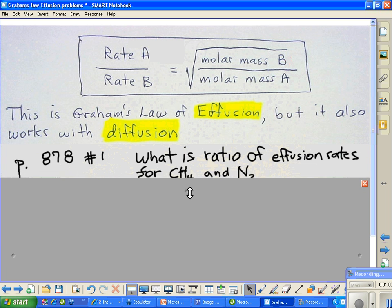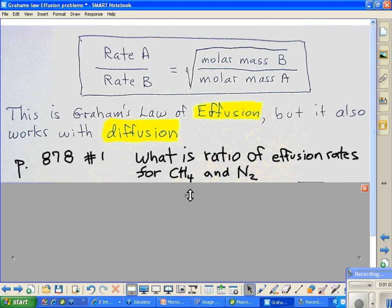First thing we want to do is look at what they're actually asking us to do. We're on page 878, and that's Appendix A at the back of the book, and number 1 in Chapter 13. What is the ratio of effusion rates for CH4, which is methane, versus nitrogen?